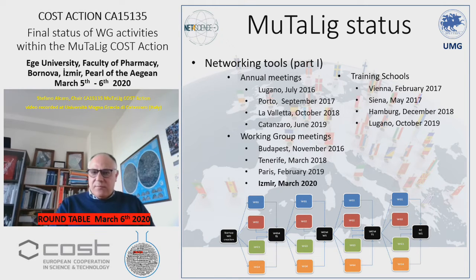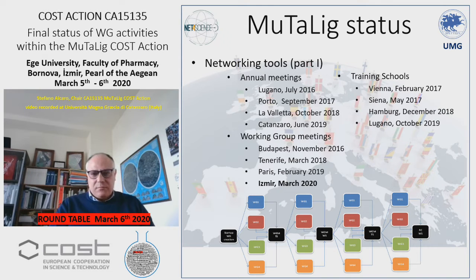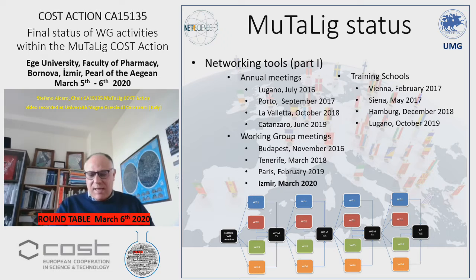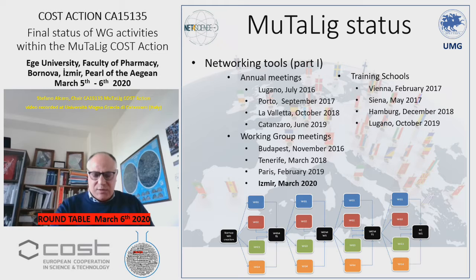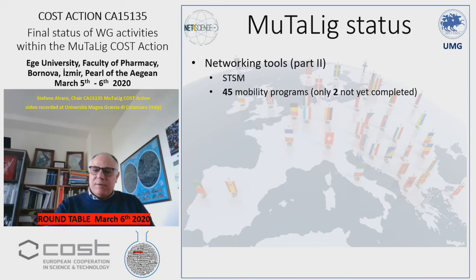The first section of this slide is related to meetings, training schools, and working group meetings. As you see, we have perfectly respected the three events per year for each category. We arrive now in the last row — it is March 2020 with the conclusion of the whole activities. So we are perfectly on time and able to complete this procedure.